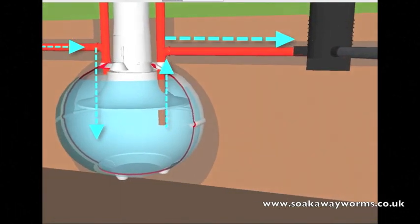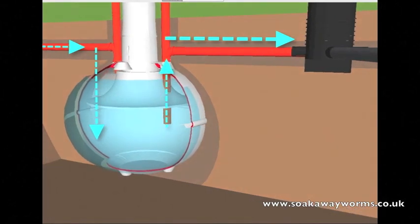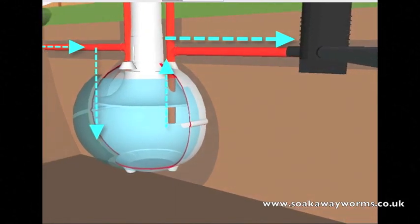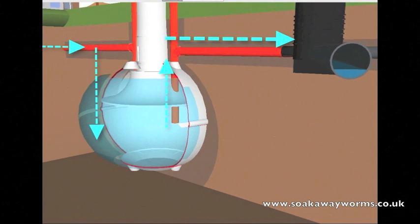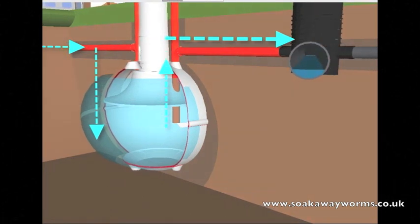From there the sewage effluent makes its way along the entire length of the soakaway and down the various branches and arteries.